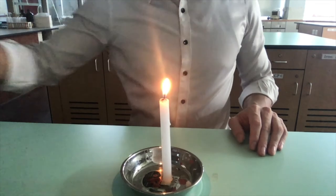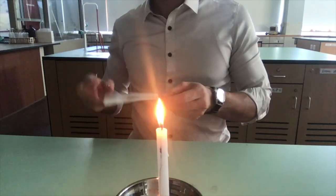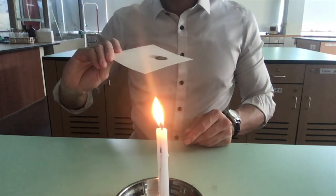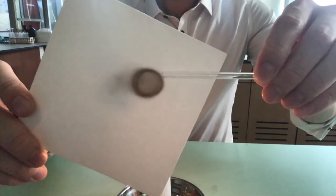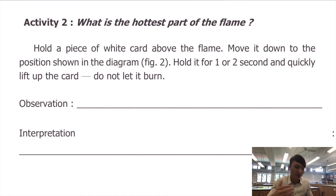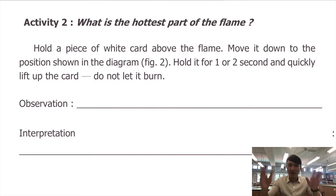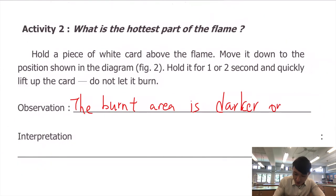Activity 2: prepare a paper cardboard. Lower the cardboard into the flame for one second and quickly lift it up. Observe the burnt area of the cardboard — it is darker on the outside than the inside. For the observation: by looking at the burnt area of the card, we can see there is a darker ring on the outside, but a lighter area on the inside. The burnt area is darker on the outside.